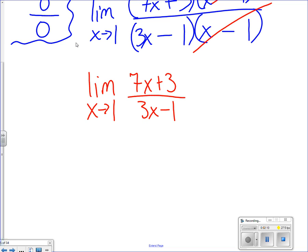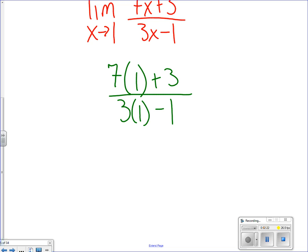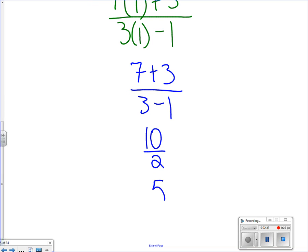looks like we end up with 7 times 1 plus 3 on top, all over 3 times 1 minus 1. And this will just eventually simplify out to be 7 plus 3 over 3 minus 1, which eventually just comes out to be 10 over 2, which is just simply 5.